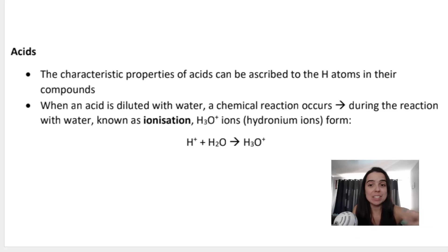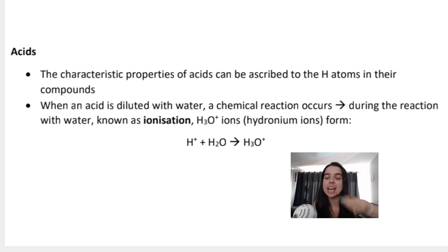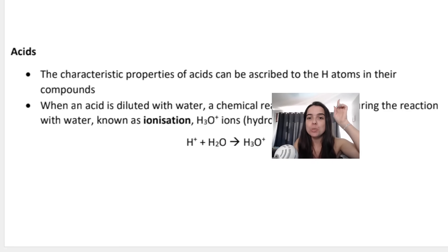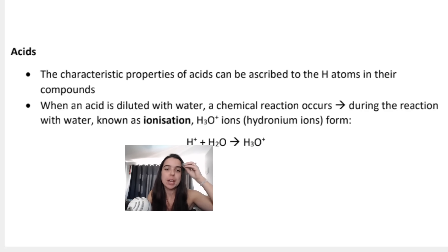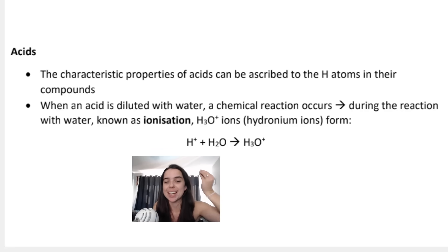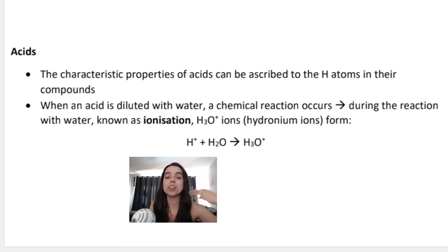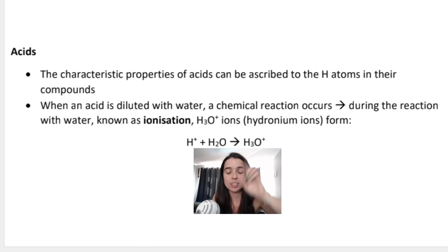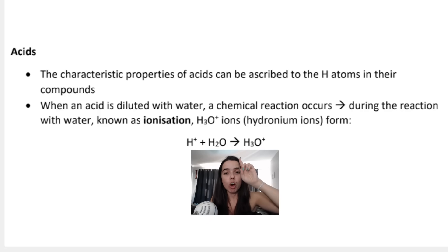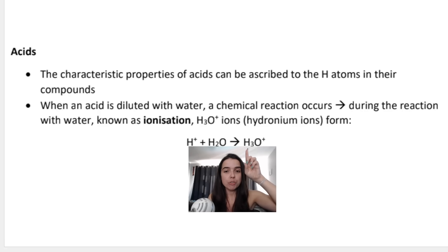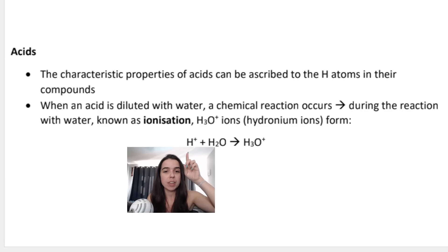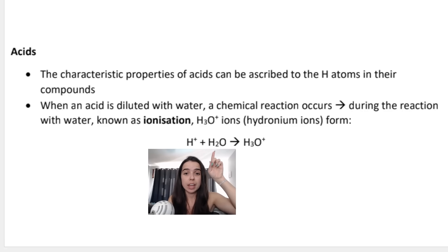The characteristic properties of acids can be attributed to the H atoms in their compound. So because of these H+ atoms, these protons, that's what gives acids their properties. When an acid is diluted with water, a chemical reaction occurs known as ionization, and we form hydronium ions. Generally when we think of H3O+ ions, we think of acids.